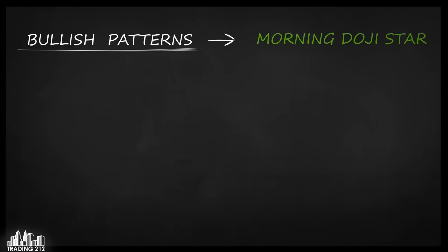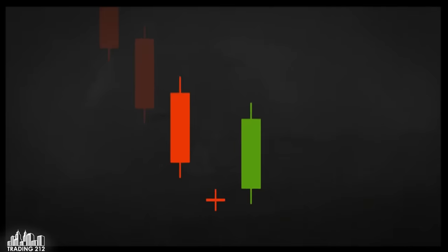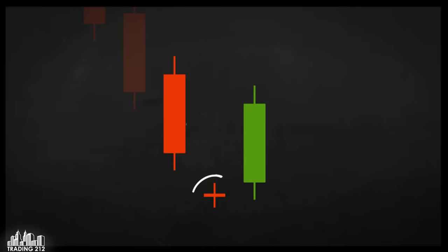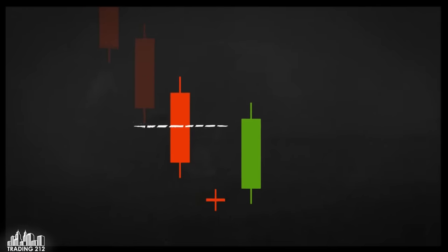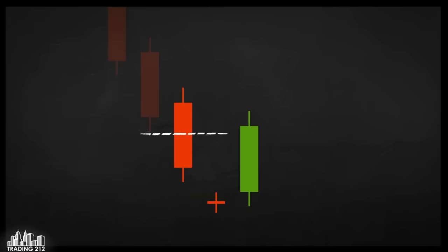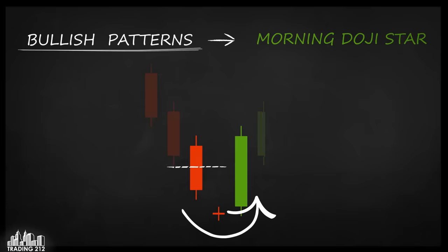Morning doji star. This pattern appears when there is a slight market movement and consists of three candles: a red one, followed by a doji, followed by a green candle closing beyond the middle of the first candle. If the green candle is longer than the red one, the signal is even more reliable. Spotting the morning doji star is a signal to buy.